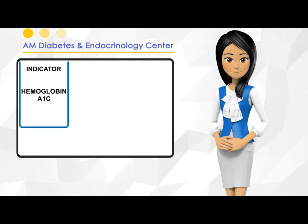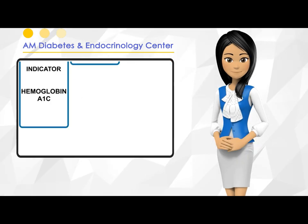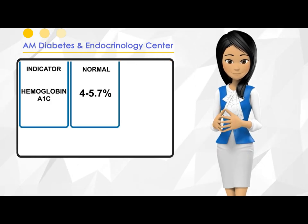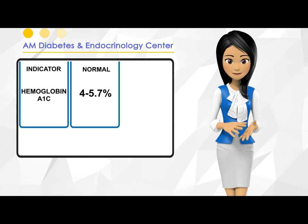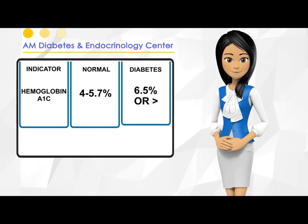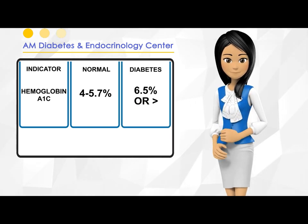Indicator: hemoglobin A1c. Normal: 4 to 5.7 percent. Diabetes: 6.5 percent or greater.